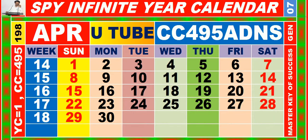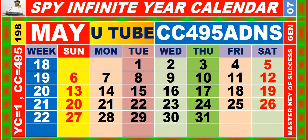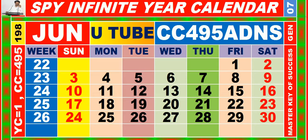Calendar for the month of April, having calendar code equal to 4, 9, 5. Calendar for the month of May, having calendar code equal to 4, 9, 5. Calendar for the month of June, having calendar code equal to 4, 9, 5.